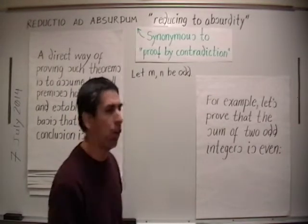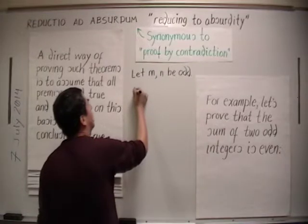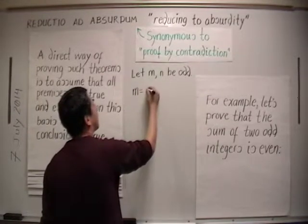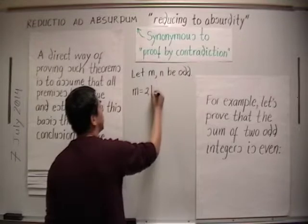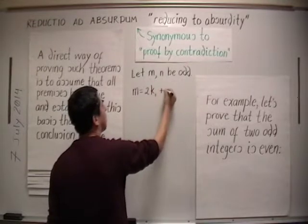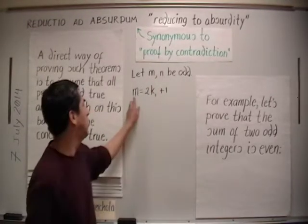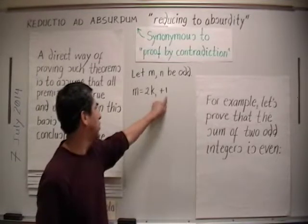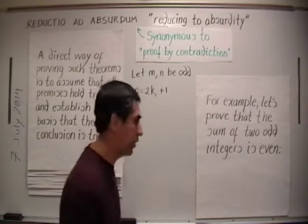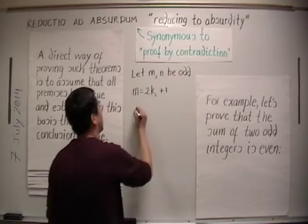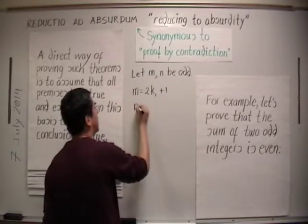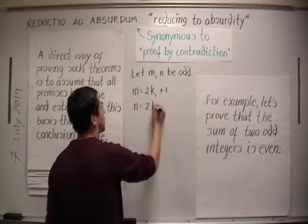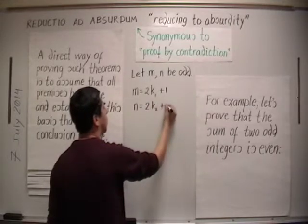If m is odd, what does that mean? It means that m is of the form 2 times an integer plus 1. So m equals 2 times k₁ plus 1, where k₁ is some integer. Similarly, n being odd means that n equals 2 times some integer k₂ plus 1.